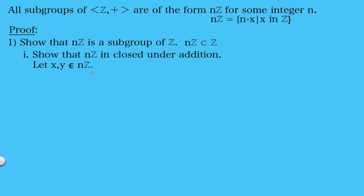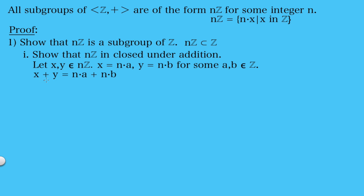We'll let x and y be in this set, then we'll say that x equals n times a and y equals n times b for some integers a and b. Now in order to show that this is closed under addition, we need to add x plus y and make sure that that is also an element in this set. So we get x plus y equals n times a plus n times b, and then we can factor out n to get n times (a plus b), and now this is clearly in the set of integer multiples of n. So this shows that it is closed under addition.